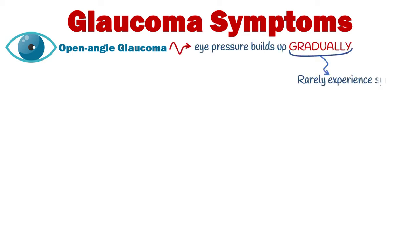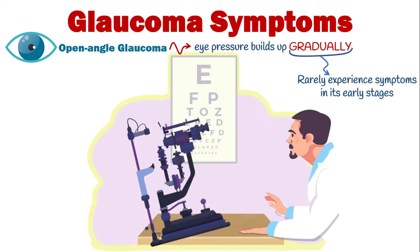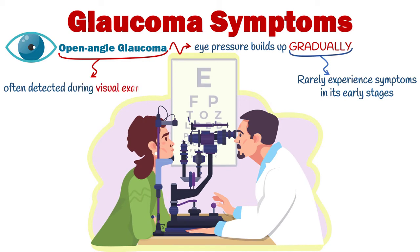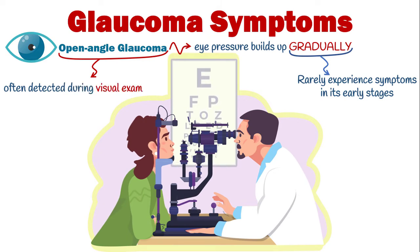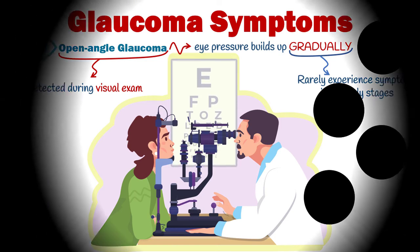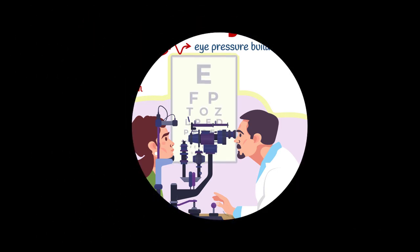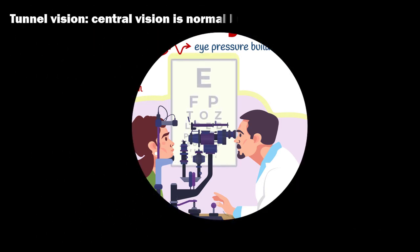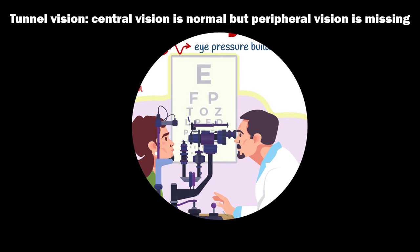Clinical symptoms vary depending on glaucoma type. In open-angle glaucoma, eye pressure builds up gradually, so affected people rarely experience symptoms in its early stages. Open-angle glaucoma is often detected incidentally during a visual exam. If left undiagnosed, progressive optic nerve damage finally impairs the visual field, causing blind spots in peripheral vision.